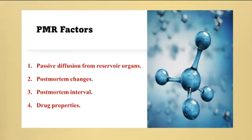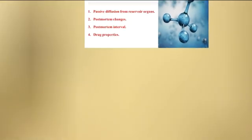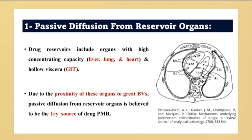There are several factors that influence post-mortem redistribution, such as passive diffusion from reservoir organs, post-mortem changes, post-mortem interval, and drug properties. Drug reservoirs include organs with high concentrated capacity, such as solid organs — liver, lung, and heart — and hollow viscera as well, parts of the GIT.